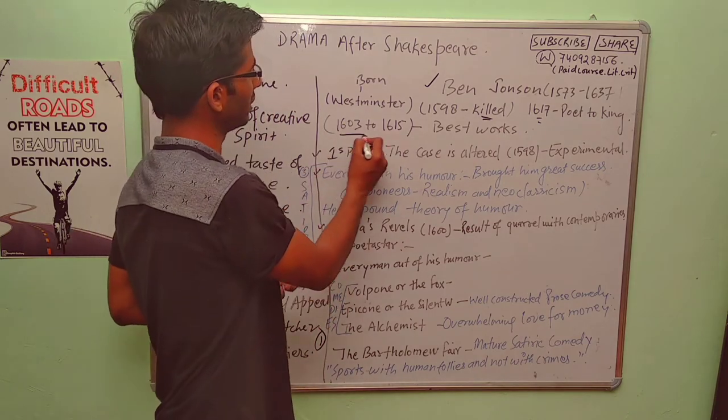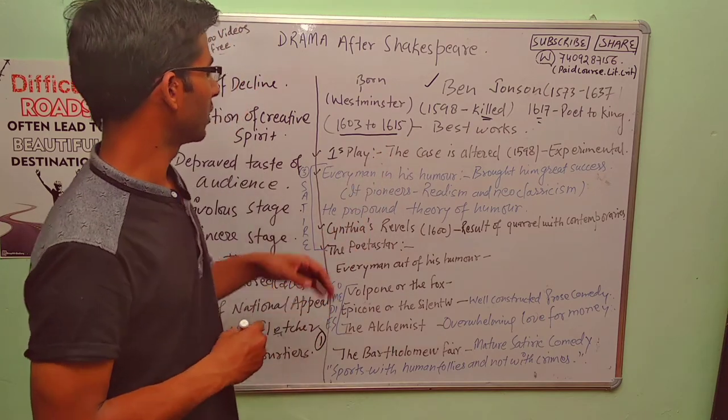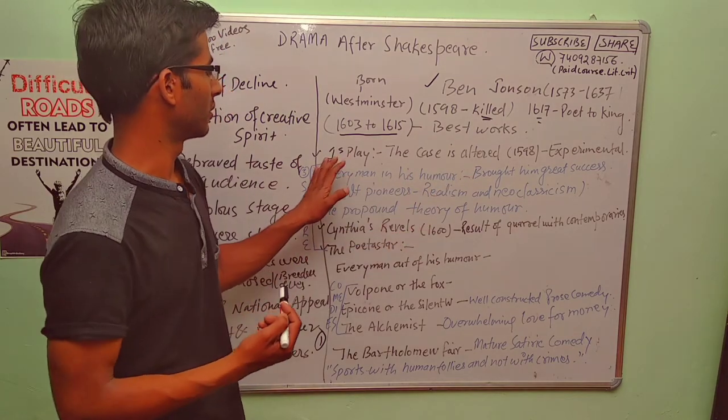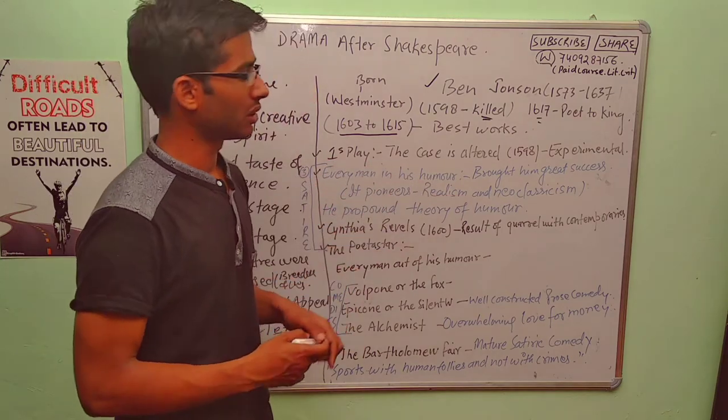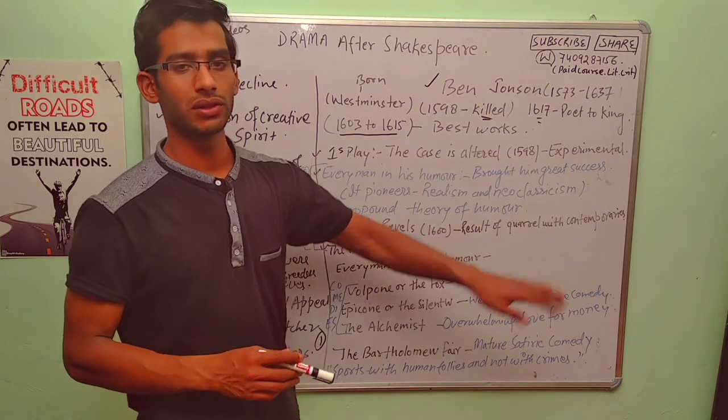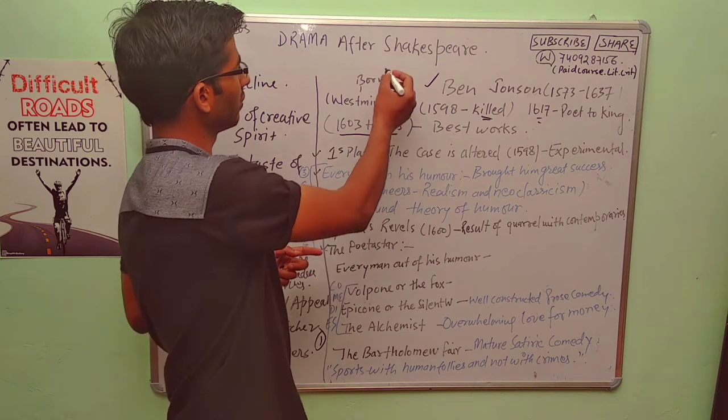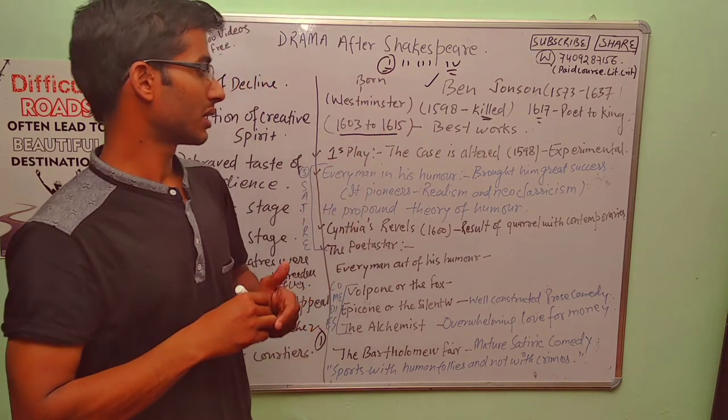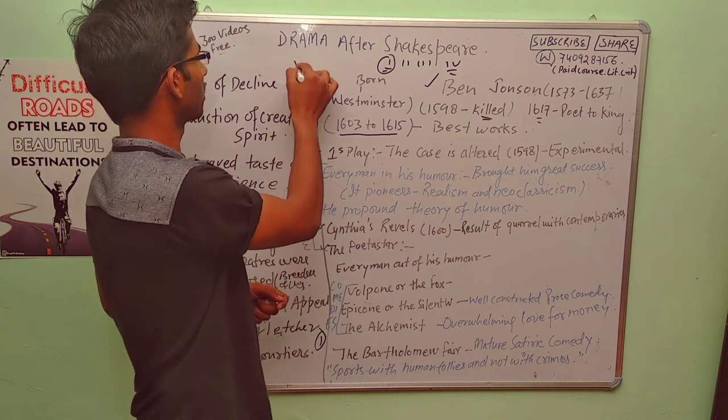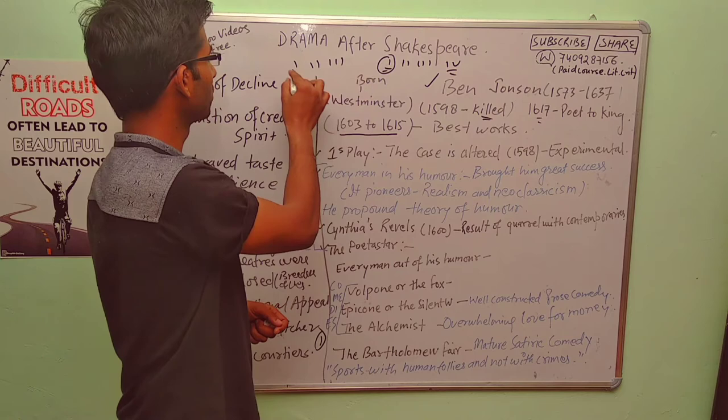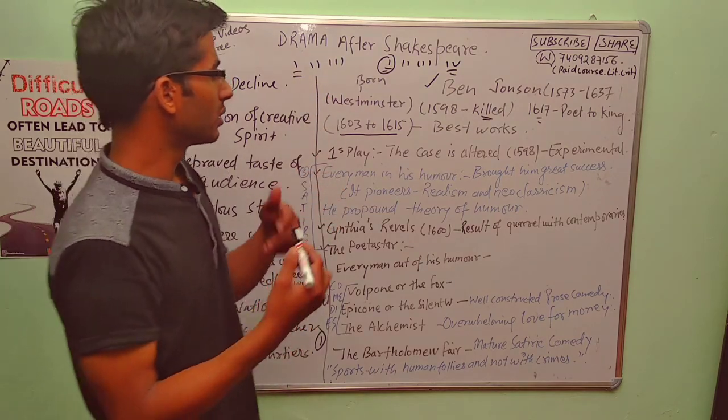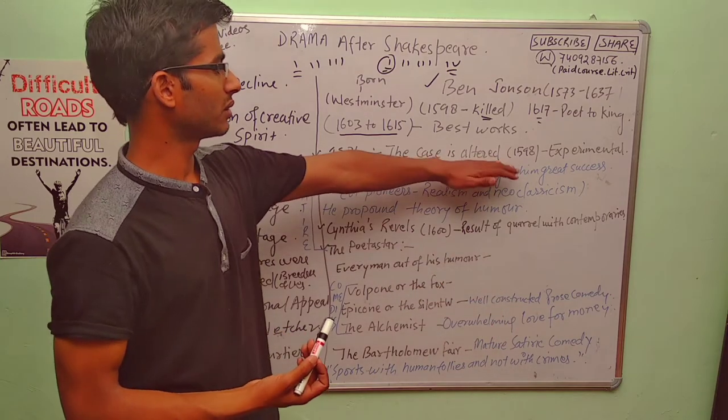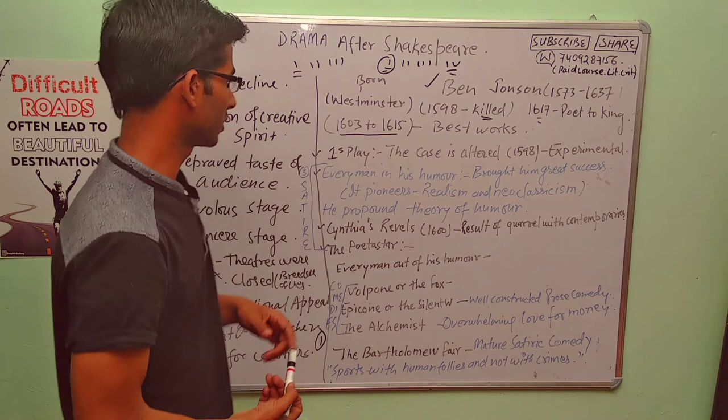1603 to 1615, this was the period when he wrote his best works. So in his best works, there are some comedies, some satires we have. And they have particular qualities. We will be talking about them. His first play was The Case is Altered. Case is Altered was written in 1598 and it was totally experimental. Like in case of Shakespeare, we had four phases. So first phase was experimental. So usually the writers, whatever they write, they wrote their best works later. But the first period is always experimental.